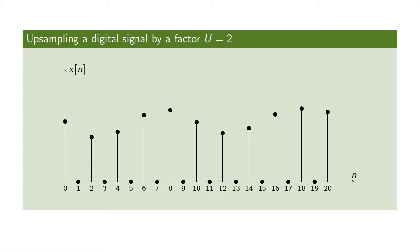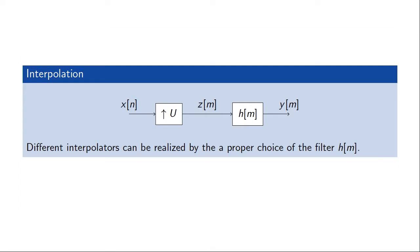Just as in downsampling we apply a low pass filter before downsampling to get proper decimation, in upsampling we use a circuit where we insert zeros and then apply filtering to realize more complicated interpolation. We take the original signal X(M), increase the sample rate by inserting zeros to get a new signal Z(M) at the higher rate, and then filter that to get our final signal Y(M), which is the upsampled or interpolated version of X(M).